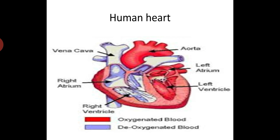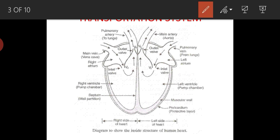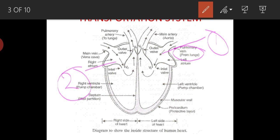This is the structure of the human heart — don't be surprised because it is a simplified version. This simplified structure is from NCERT. Note this well, because many times NCERT questions will ask you to identify parts. The structure will be marked but the name will not be given. It will be given as a number, and you will be asked: what is the name of the part marked by number 1 and number 2?